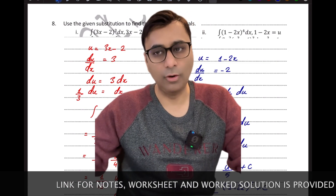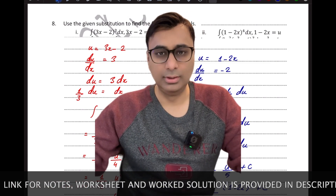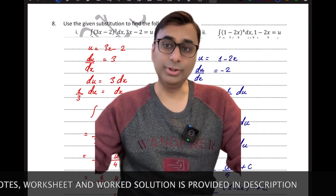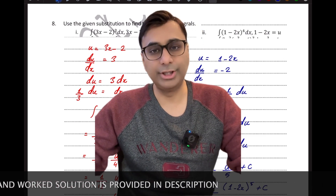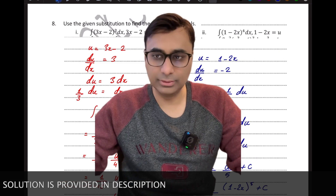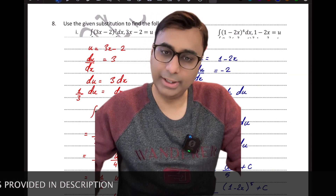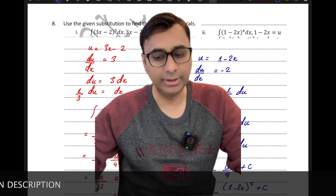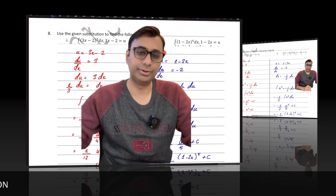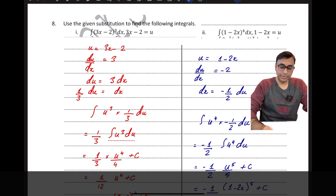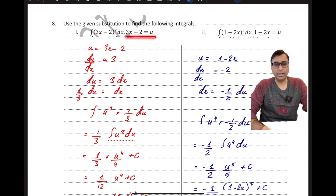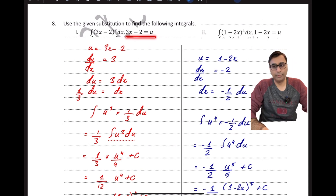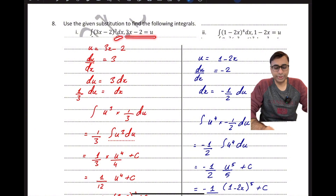The substitution will always be given to you. You must always be able to do the substitution entirely — the old variable should be completely gone and you should have the entirely new variable in the equation. To do that, every time a substitution is given you will have to differentiate that equation of substitution so that you can get the substitute for dx as well.